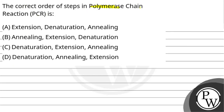The correct order of steps in polymerase chain reaction PCR is: Option A - extension, denaturation, annealing; Option B - annealing, extension, denaturation; Option C - denaturation, extension, annealing; and Option D - denaturation, annealing, extension.